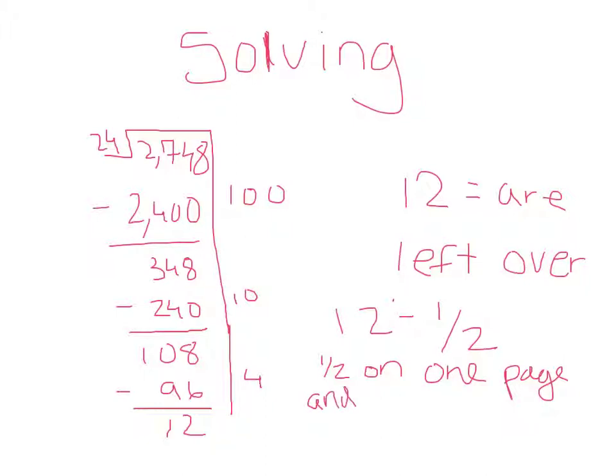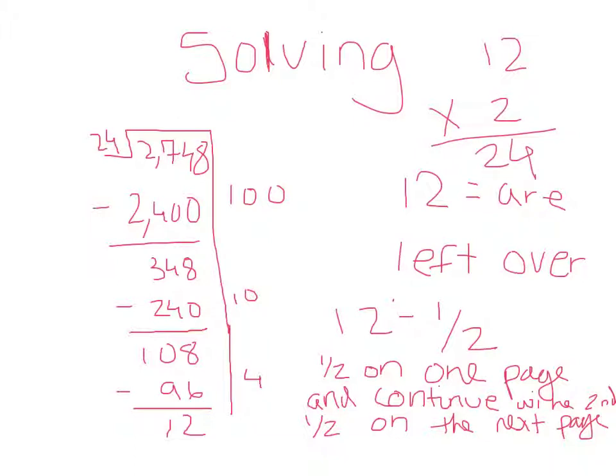And then continue with the second half on the next page. So, then that means we're just doing 12 times 2, and that'd be 24, so that would go in exactly. So, basically, we would have 100 plus 10 plus 4, which equals 114 and one half.